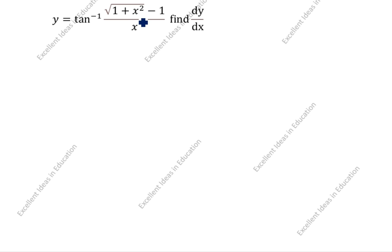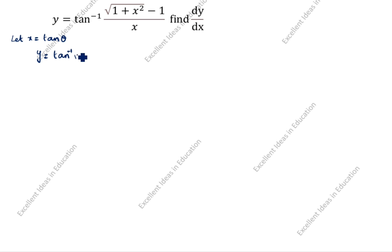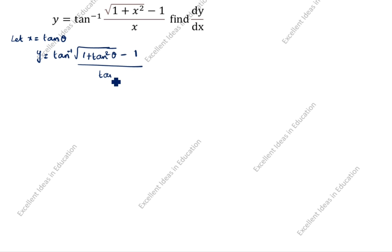First we will take x and apply a substitution. Let x is equal to tan theta. Then y is equal to tan inverse of root of 1 plus x squared — substituting, this becomes 1 plus tan squared theta minus 1, divided by tan theta.